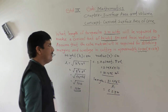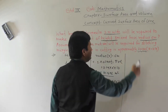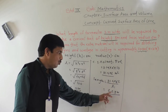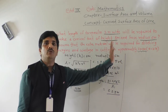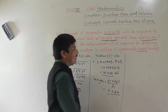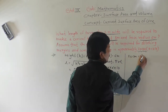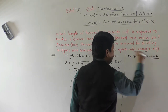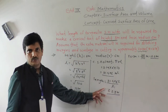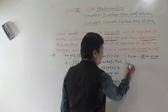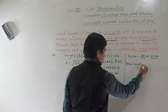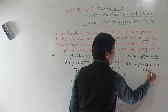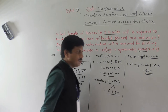But one more thing is given — 20 centimeters of extra material is required. So we need to add that material here. Converting: 20 centimeters = 20 ÷ 100 = 0.2 meters. So total length = 62.8 + 0.2 = 63 meters. That is the final answer.